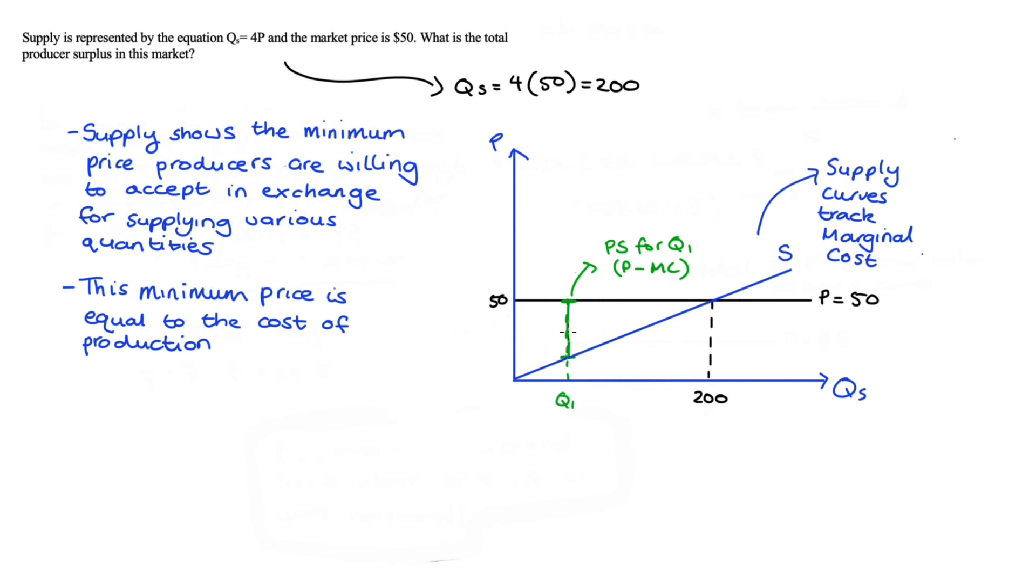But in this example, I'm going to add up over all of the quantities supplied. And this amounts to taking the whole area under the price above the supply curve, just for all of those units supplied. So up until Q is equal to 200. So we get this green area here, and that's the area above supply below price.